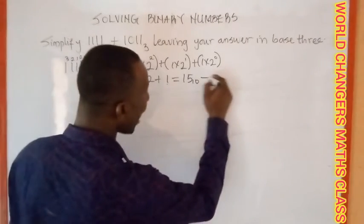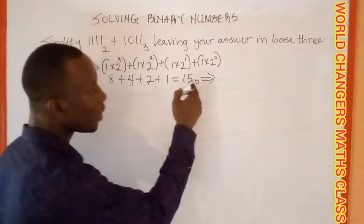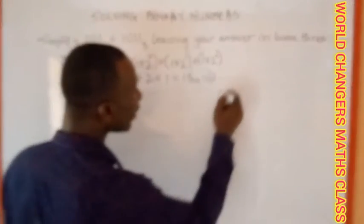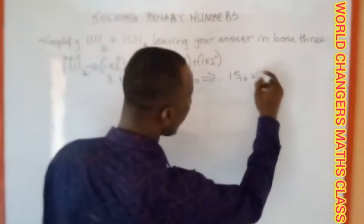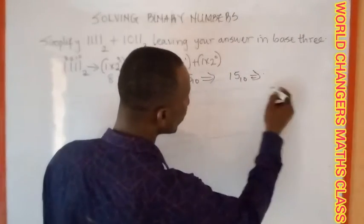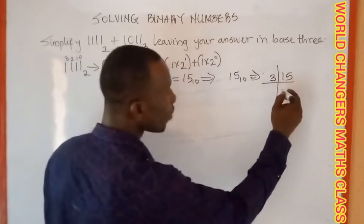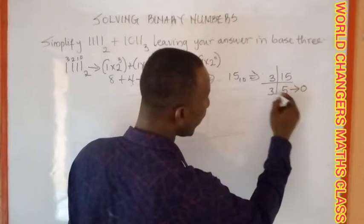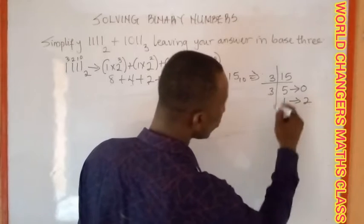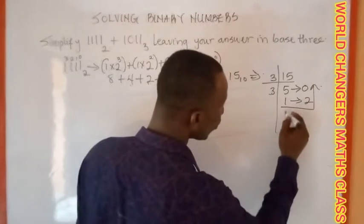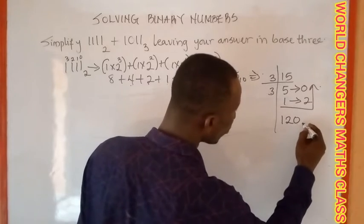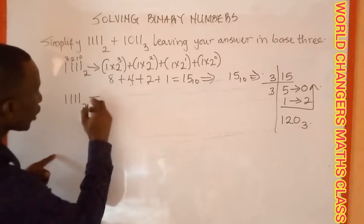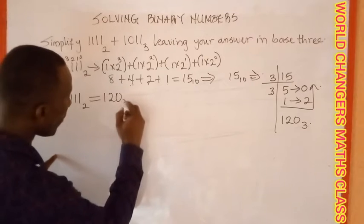Now we are going to convert fifteen base ten back to base three, because we are asked to leave our answer in base three. Three into fifteen gives me five, remainder zero. Three into five gives me one, remainder two. Nothing can go again, so reading upward, the answer is 1, 2, 0 — that is 120 base three. So 1111 base two is equivalent to 120 base three.